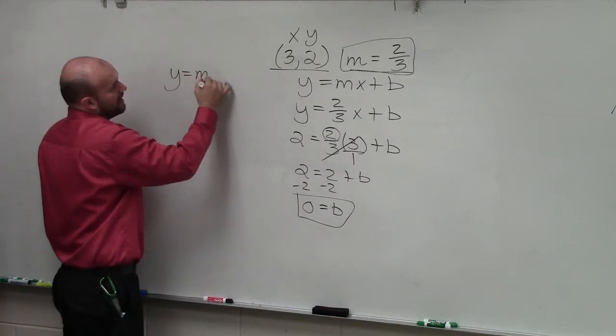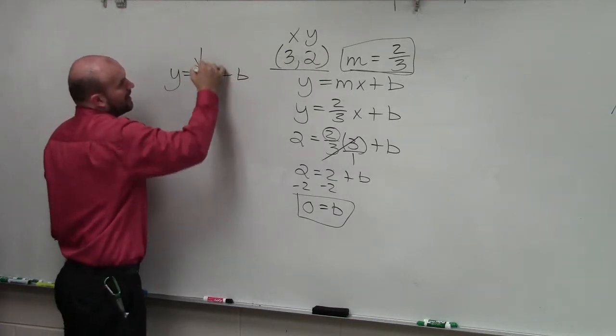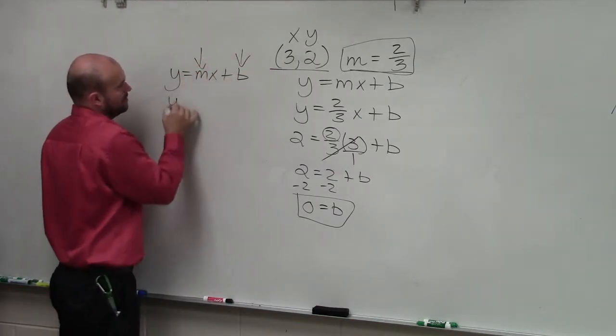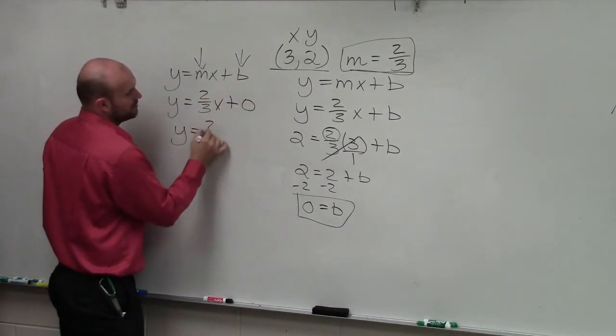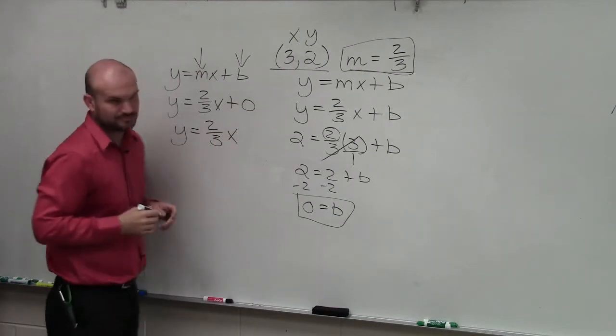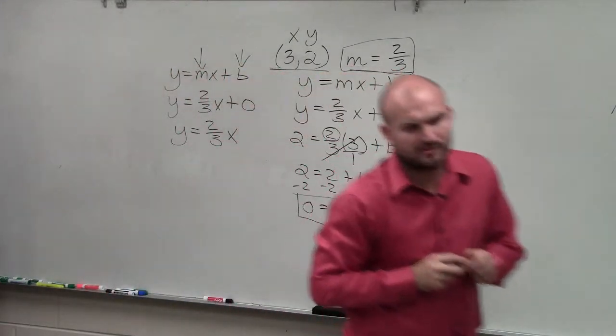So now I can write the equation of the line. y equals mx plus b. Now I know m, and now I know b. y equals 2 thirds x plus 0, or y equals 2 thirds x. Because we don't really need to write plus 0.